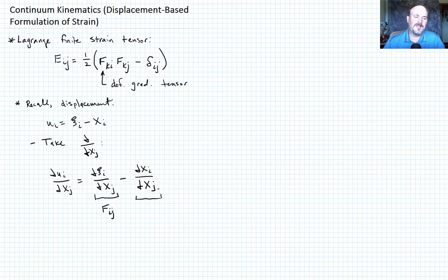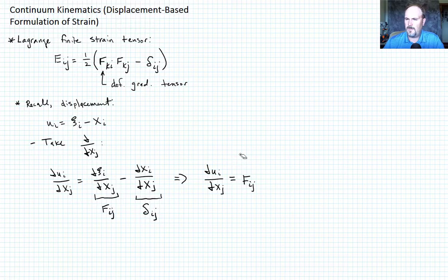So hopefully that suggests to you that this should be delta ij. So then we can go ahead and write that partial u_i partial X_j equals F_ij minus delta ij. And I'm going to, as a shorthand notation, I'm going to call this u_i comma j. So then I can rewrite now in terms of F_ij and say that that is u_i comma j plus delta ij.